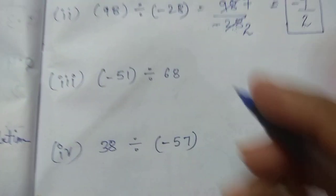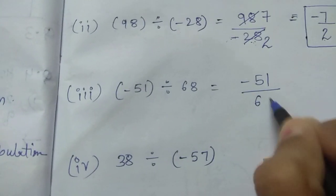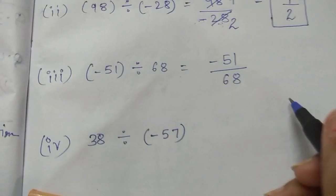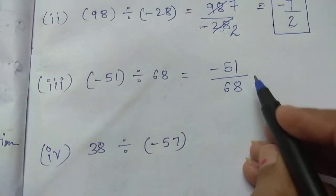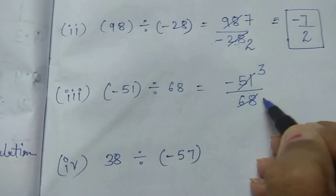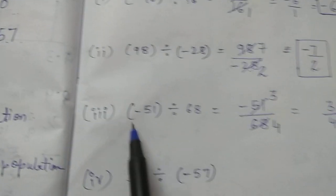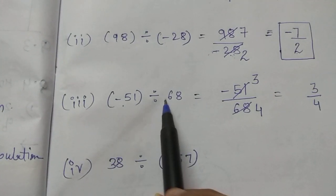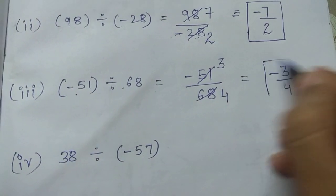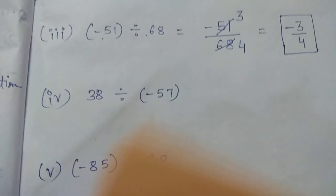Next, negative 51 divided by 68. So, 51 and 68 goes in which table? Yeah, 17's table. So, 17, 17, 3's are, 17, 4's are, 3 upon 4. Negative, positive, so our answer is negative. Negative, we cannot divide this further. So, minus 3 upon 4.